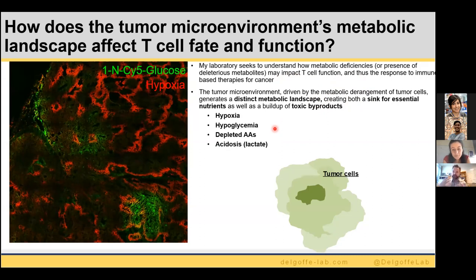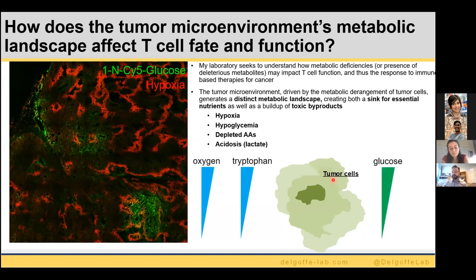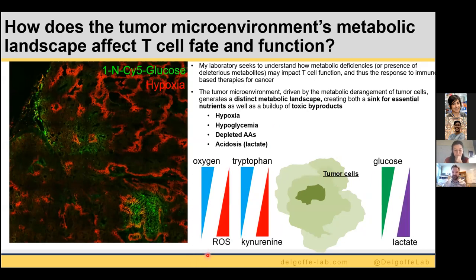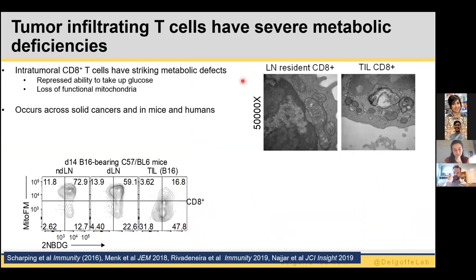What I hope to convey today is that a lot of people have been talking about how tumor cells deplete the environment — and that is totally true. Things like oxygen, tryptophan, and glucose are depleted in some tumor microenvironments. But it's not just the loss of the good stuff; the byproducts of that metabolism can have very major immunoregulatory effects. It's not just the buildup of ROS, and most importantly, it's not just the depletion of glucose but rather the buildup of lactate that is a major immunosuppressive feature of cancer.